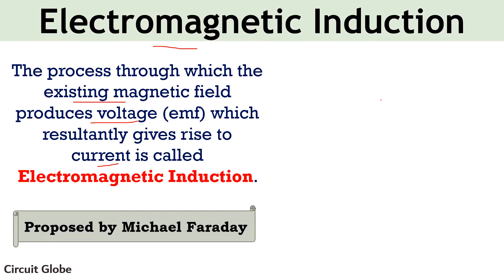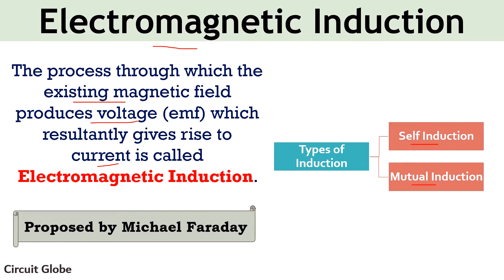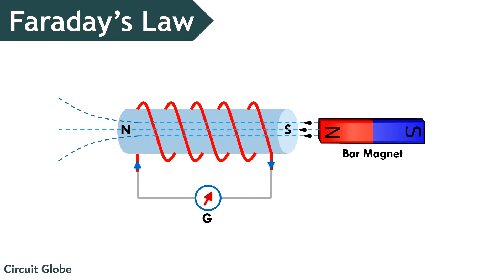Electromagnetic induction is of two types: self-induction and mutual induction. Here in this video lecture, we will focus on self-induction. Faraday experimented that when a bar magnet is moved away or towards a solenoid or a coil connected to a circuit, then current begins to flow through the circuit. And as the current flows through the circuit, the galvanometer connected in the circuit shows deflection. The deflection in the galvanometer towards left or right depends upon the motion of the bar magnet, i.e. on the varying magnetic field.